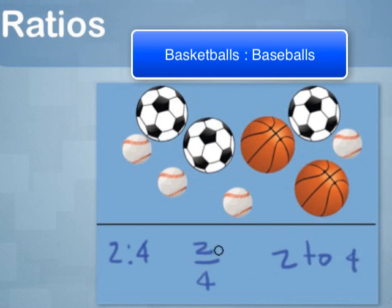Notice that the fraction version is a fraction that can be simplified. Two-fourths can be simplified to one-half. So another better way of expressing the ratio of basketballs to baseballs is this: one to two, one-half, and one to two.